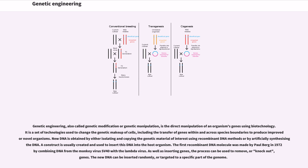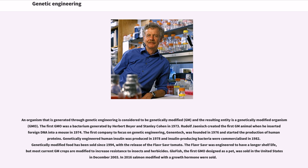The first recombinant DNA molecule was made by Paul Berg in 1972 by combining DNA from the monkey virus SV40 with the lambda virus. As well as inserting genes, the process can be used to remove, or knock out, genes. The new DNA can be inserted randomly or targeted to a specific part of the genome. An organism generated through genetic engineering is considered to be genetically modified, or GM, and the resulting entity is a genetically modified organism.